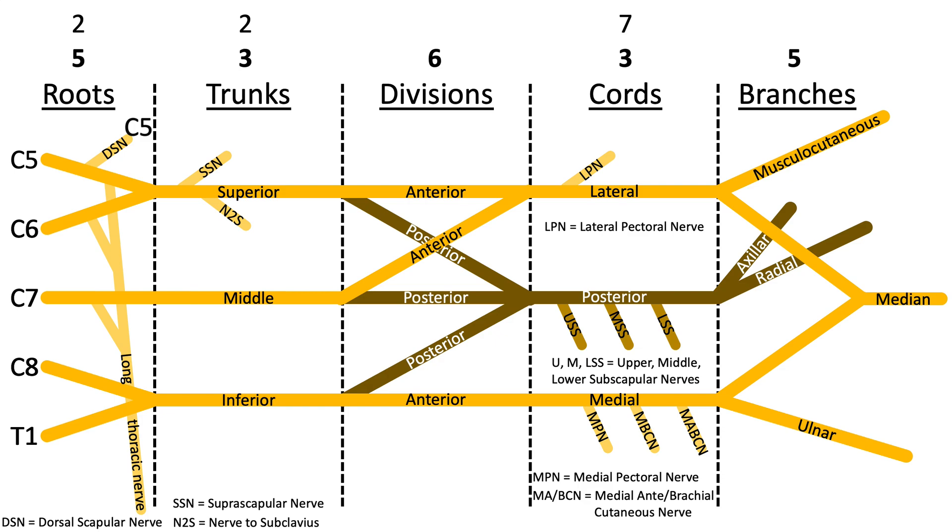If you look at the long thoracic nerve, likewise you'll note that spinal nerve roots C5, C6, and C7 all contribute to the formation of the long thoracic nerve. You can continue this sequence for the remainder of trunks, divisions, cords,